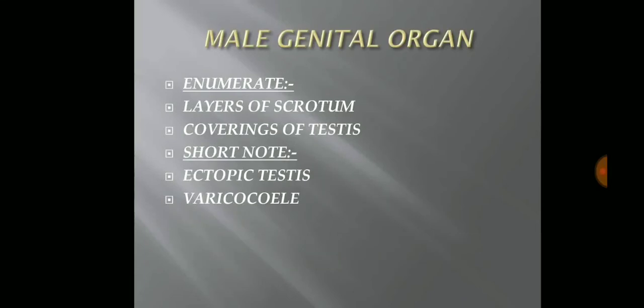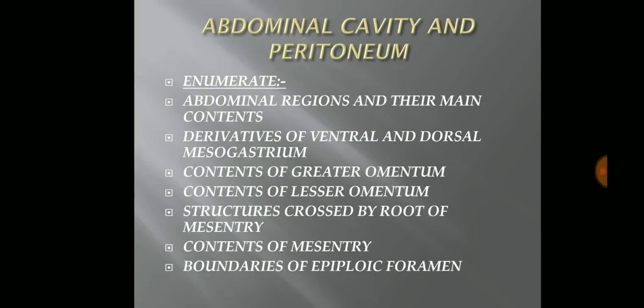Moving to the next chapter, that is the male genital organ. Enumerate questions are: layers of the scrotum — this is the most important question — coverings of the testes, which is less important. And short note on sites of ectopic testes, which is the most important question. Varicocele can be rarely asked.